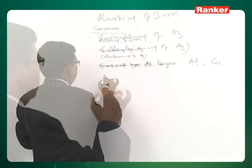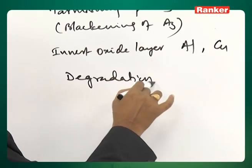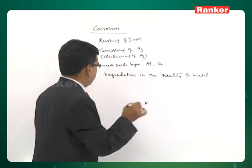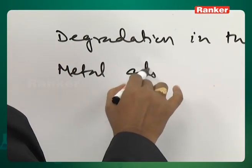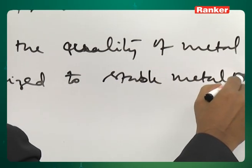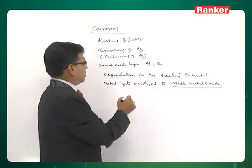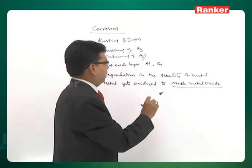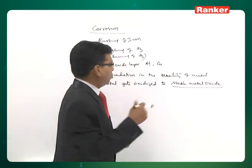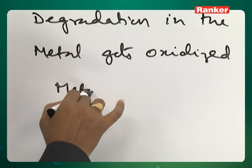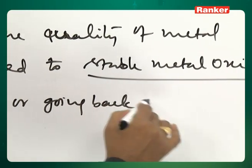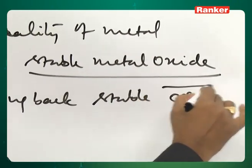Basically, what is corrosion? Corrosion is nothing but degradation — degradation in the quality of metal. Why will there be degradation? Because what happens is the metal gets oxidized to a stable metal oxide. Metal gets oxidized to stable metal oxide — that is what actually happens. Iron gets oxidized to ferric oxide, silver gets oxidized to silver oxide, aluminum gets oxidized to aluminum oxide, copper gets oxidized to copper oxide. Basically, the metal is converting or going back to its stable ore form.